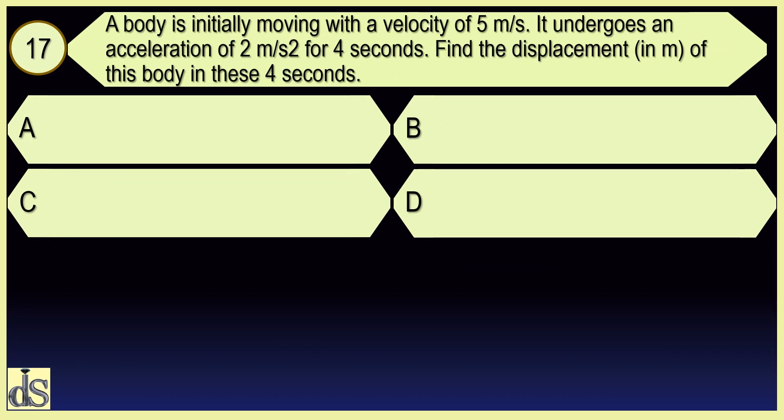A body is initially moving with a velocity of 5 meters per second. It undergoes an acceleration of 2 meters per second squared for 4 seconds. Find the displacement of this body in these 4 seconds. The answer is 36.